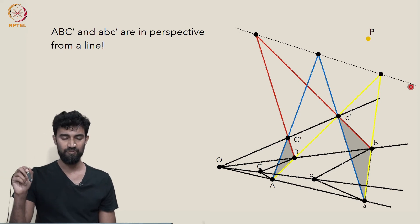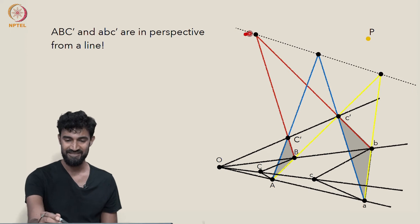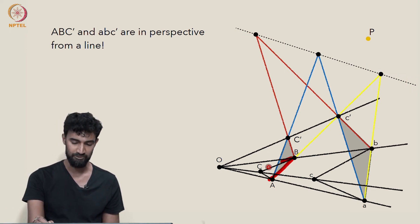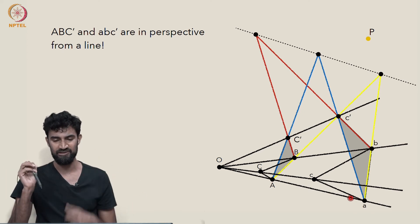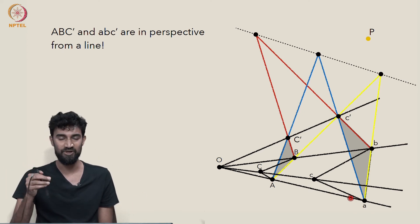and it's also not the axis of perspectivity for our original triangles. It's only the axis of perspectivity for these lifted triangles. So what do we do next? How can we finish our proof?